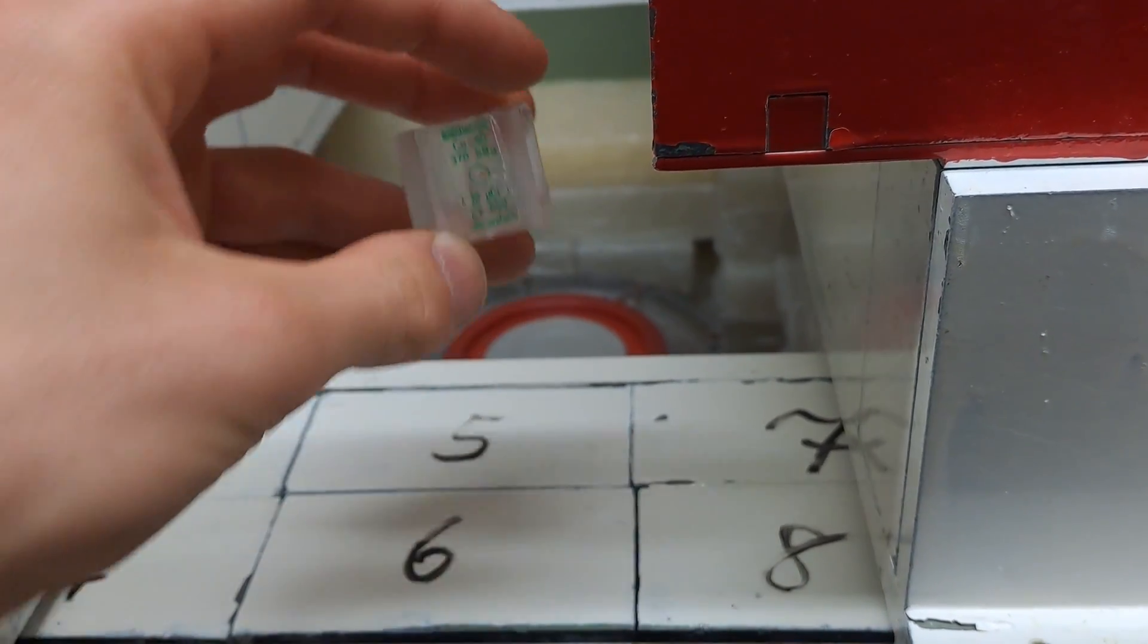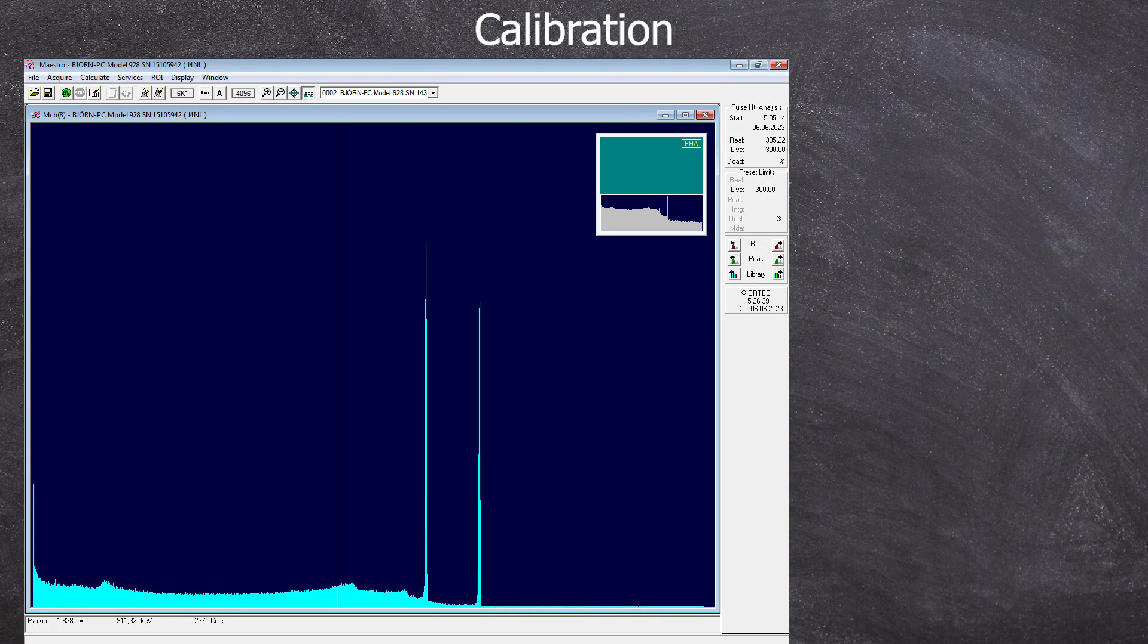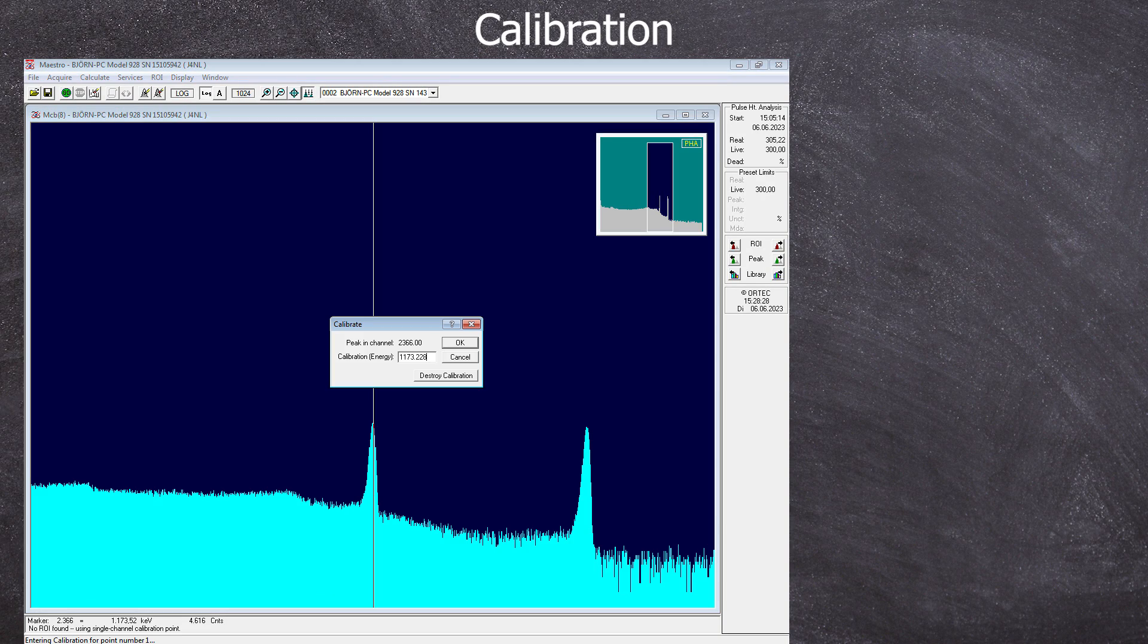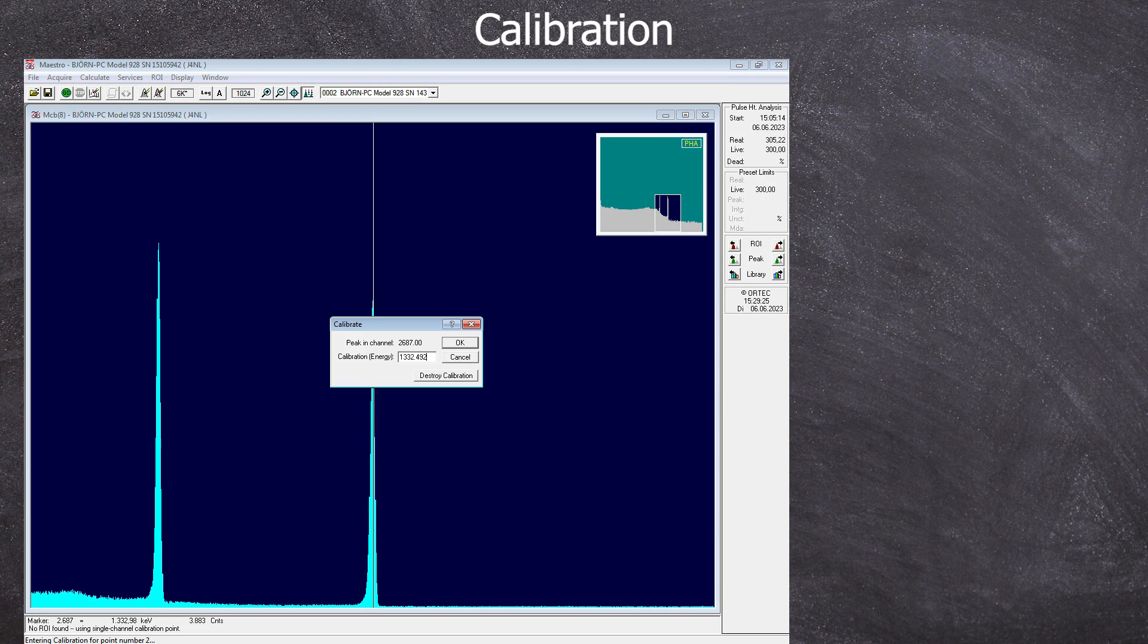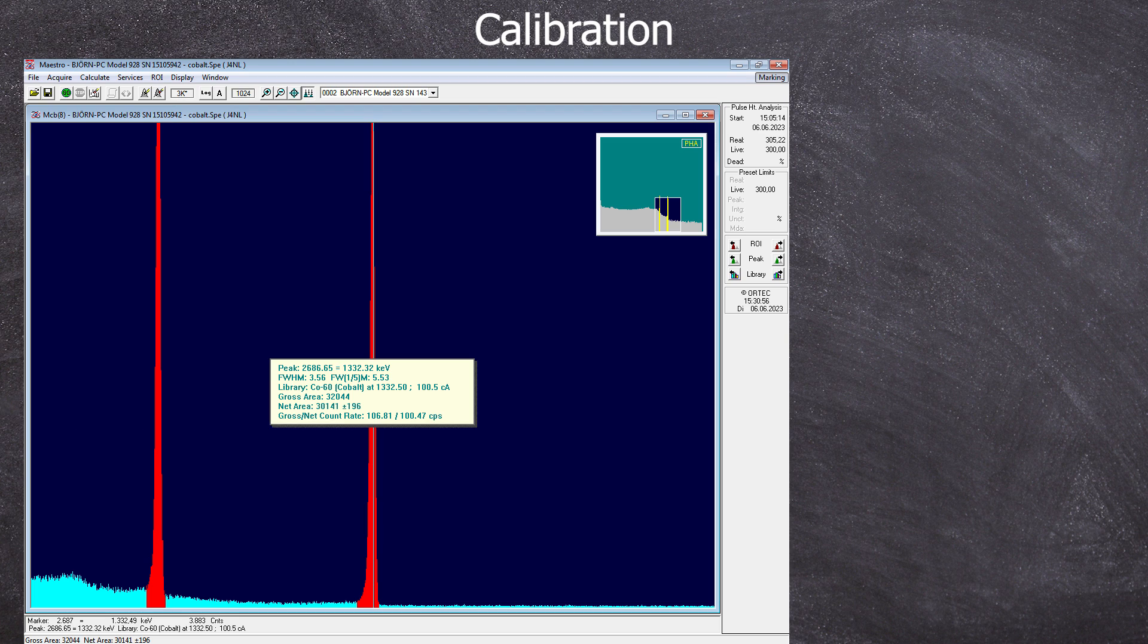Now to proceed with Cobalt-60. This element has two gamma peaks, one at 1173 keV and the other at 1332 keV. For the lower energy peak, the ROI shows a count rate of 115 CPS. And for the high energy peak, it's 101 CPS.